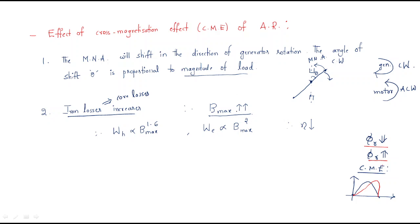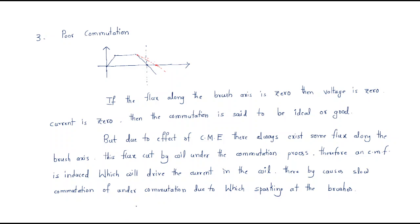There are two types of iron losses: hysteresis losses, which are proportional to maximum flux density raised to the power 1.6, and eddy current losses, which are proportional to the square of maximum flux density. Both types increase due to cross magnetization. Since losses increase, efficiency decreases — so cross magnetization ultimately reduces efficiency.